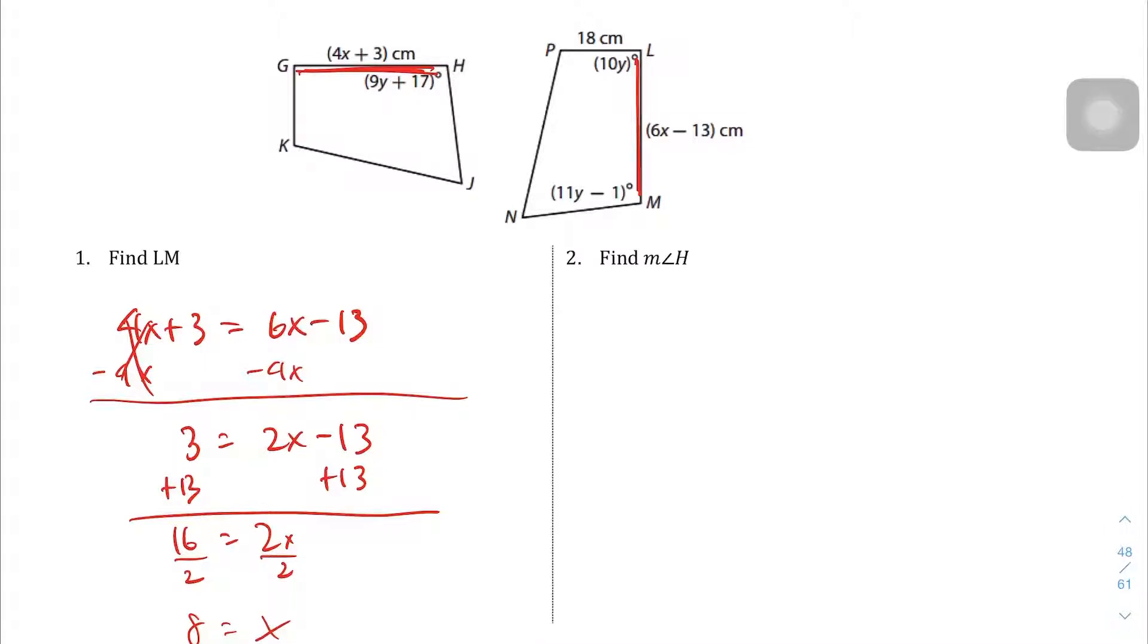We are not done. I see so many students who just turn in the answer that way. We are not done. We just found what x was, and so we need to plug it back into here now that we know what x is. So it's going to be 6 times 8, since we know that x equals 8, minus 13. 6 times 8 is 48, minus 13, which ends up being 35. So LM equals 35 centimeters. The units we're using are centimeters. And so there's question 1.